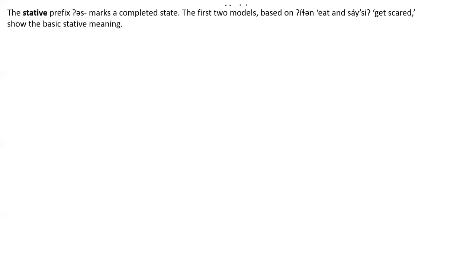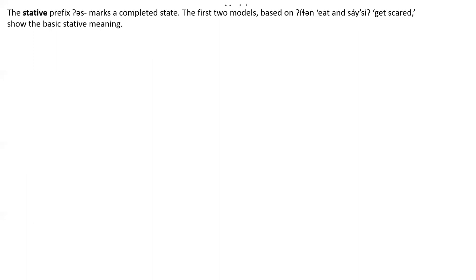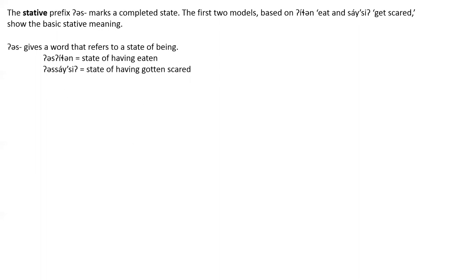The stative prefix marks a completed state. The first two models, based on 'eat / have eaten' and 'get scared / be scared', show the basic stative meaning. Adding the stative prefix gives a word that refers to a state of being. So 'as-eatlen' refers to the state of having eaten, and 'as-sightsee' refers to the state of having gotten scared.